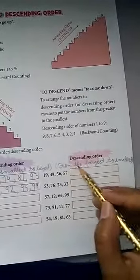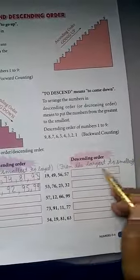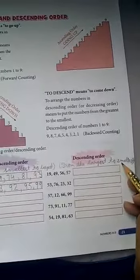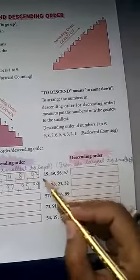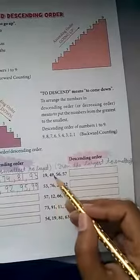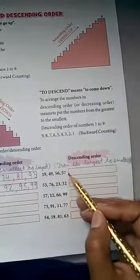Next, descending order from the largest to smallest. Arrange according to backward counting. 19, 49, 56, 57. Which is the largest number? 57. Next largest number is 56, next largest is 49, and last number is 19.